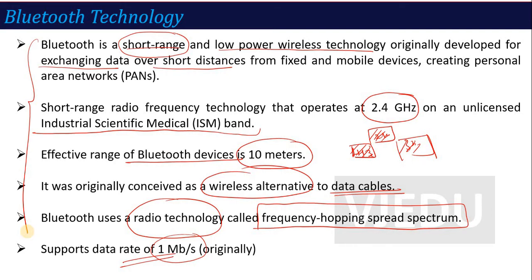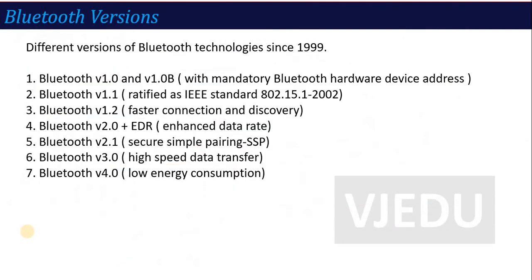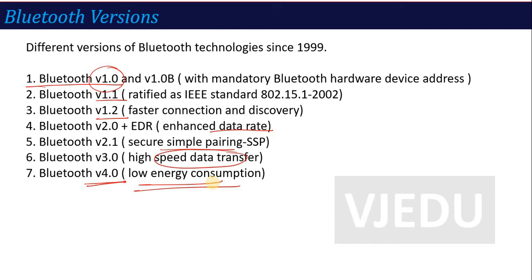Bluetooth was first released in July 1999 and there are different versions available. Version 1.0 or 1.0b requires a mandatory Bluetooth hardware device address to connect. Version 1.1 is considered an IEEE standard communication Bluetooth version. Version 1.2 offers faster connection and device discovery. Further versions brought enhanced data rate transfer, improved pairing, improved speed, and Bluetooth 4.0 introduced low energy consumption.